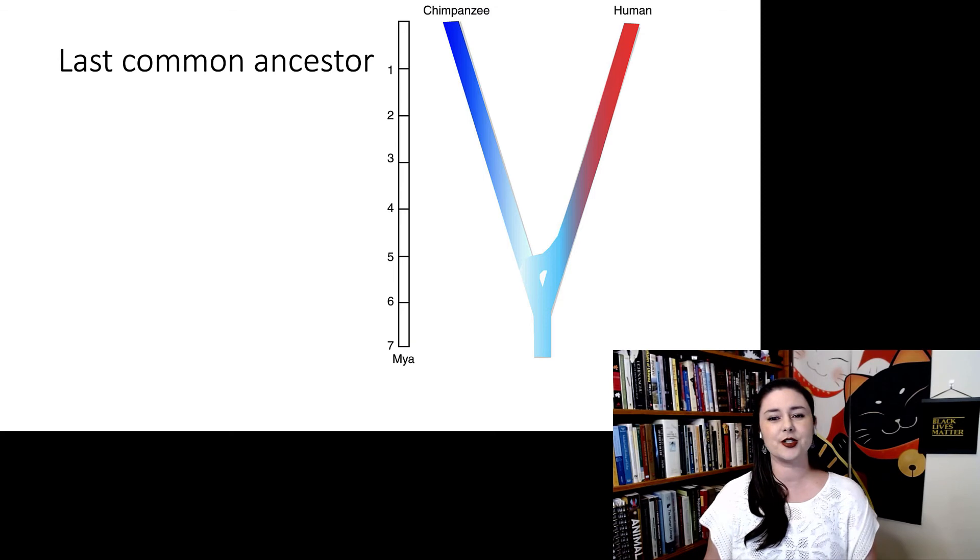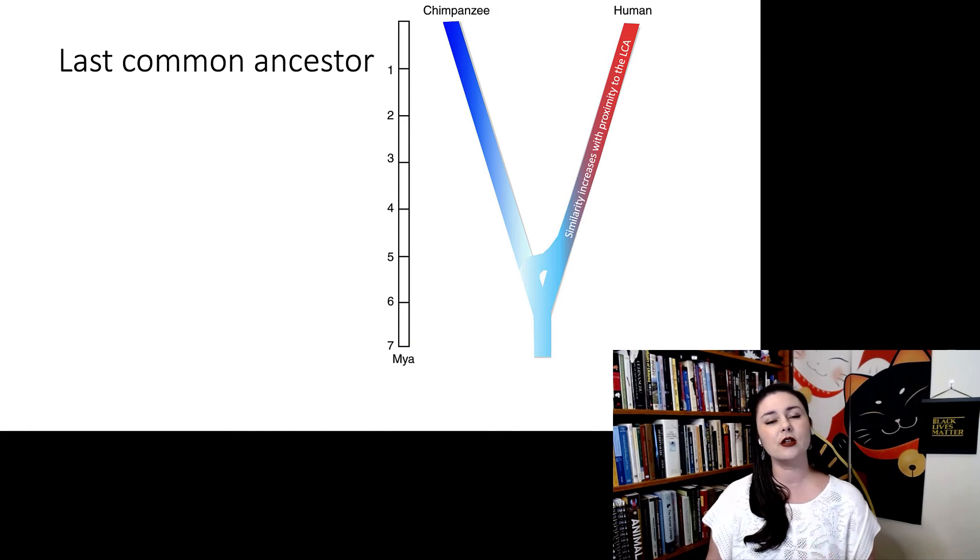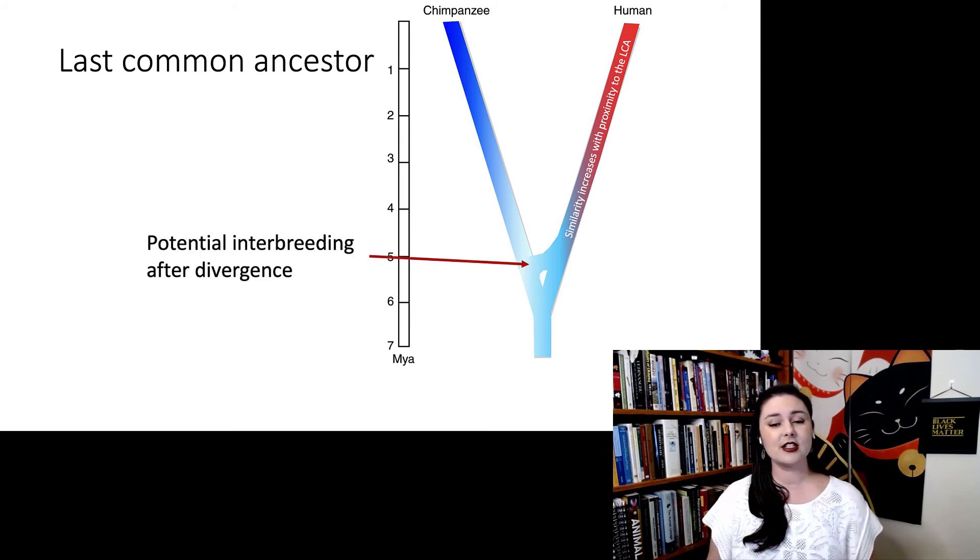We can zoom in here. So here's a demonstration of what this might have looked like. And as we're looking closer and closer to that last common ancestor, as we are going back further in time, our ancestors are going to be more similar in morphology and behavior to that last common ancestor. And of course, that will happen on the chimpanzee line as well. And another thing this does a nice job of showcasing is that there is potential inbreeding after the divergence. So as the closer we get to the last common ancestor, the messier things are going to be.